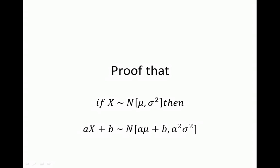In this video I will talk about a normally distributed random variable and I will prove that a linear transformation of the normally distributed random variable — by linear transformation I mean a times X plus B, where X is a normal variable and a and B are constants — is also normally distributed.